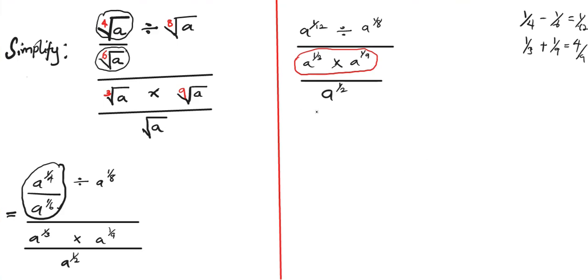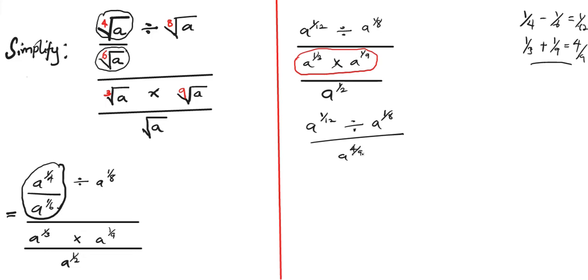Replacing the product, we now have: a to the power one over twelve, divided by a to the power one over eight, then divided by a to the power four over nine, then divided by a to the power one over two.